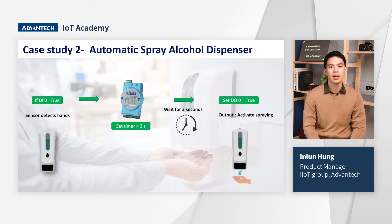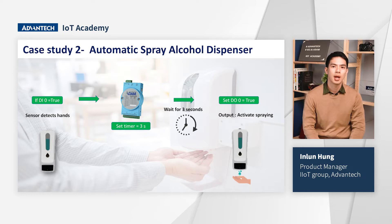In the second case, the control process of an automatic spray alcohol dispenser can also be set up by GCL. The sensor on the dispenser detects hands and sends an input signal to ADAM. After waiting three seconds, ADAM will send an output signal to the dispenser to activate the spraying function.